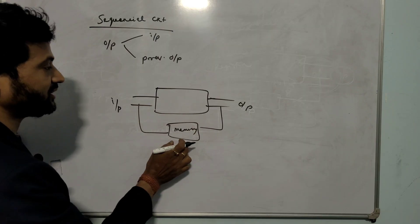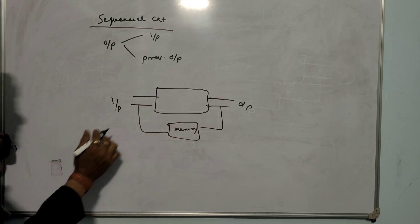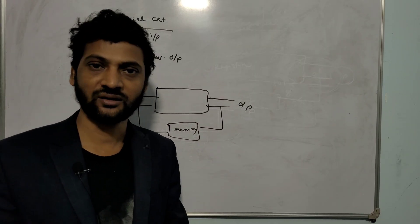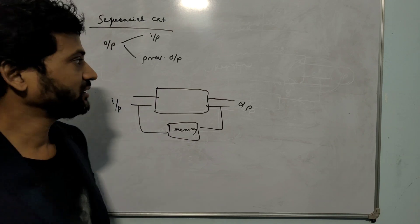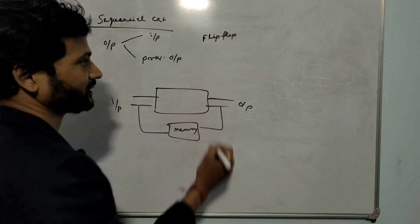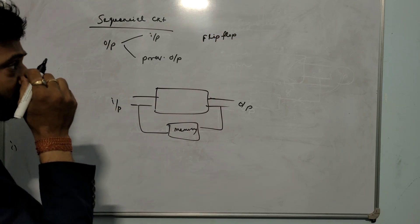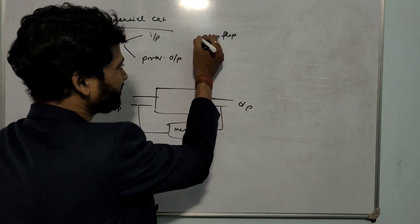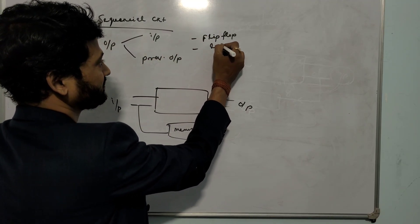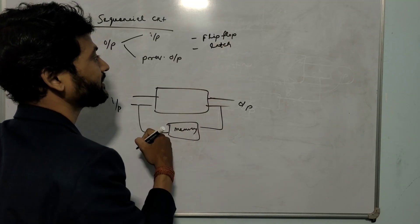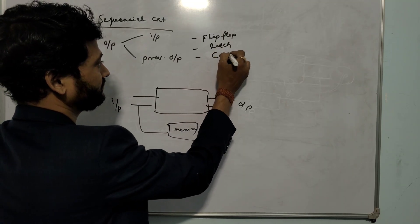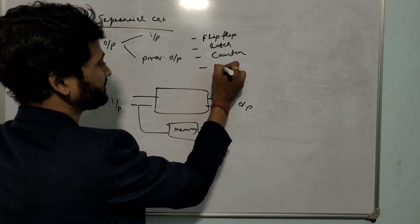There must be a feedback path in a sequential circuit. We use such circuits in day-to-day life. Examples include flip-flop, latch circuit, counter, and register. This is the sequential circuit.